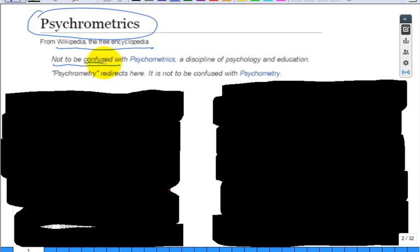Not to be confused - that's why I'm trying to look this up. I'm typically confused about what a word means. But not to be confused with psychometrics, which is a discipline of psychology and education. Psychrometry redirects here, it is not to be confused with psychrometry. Now I'm really confused.